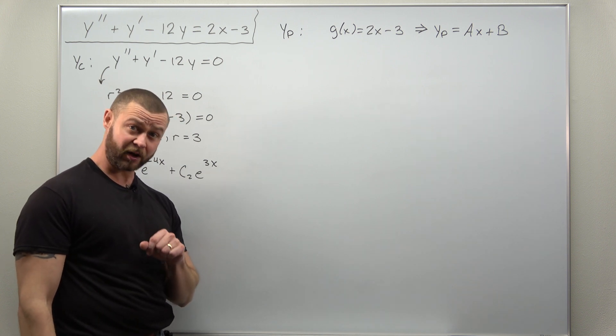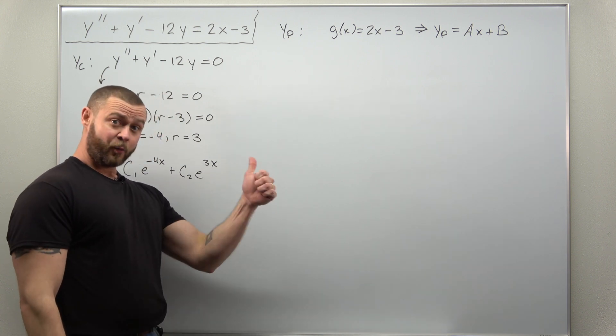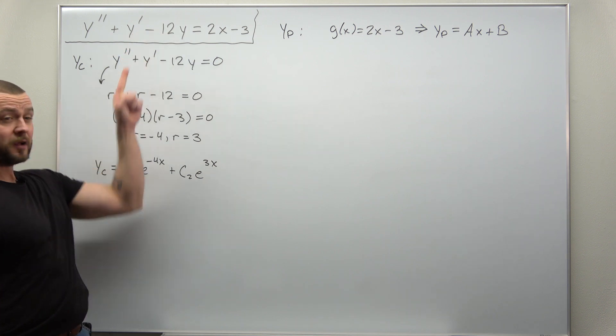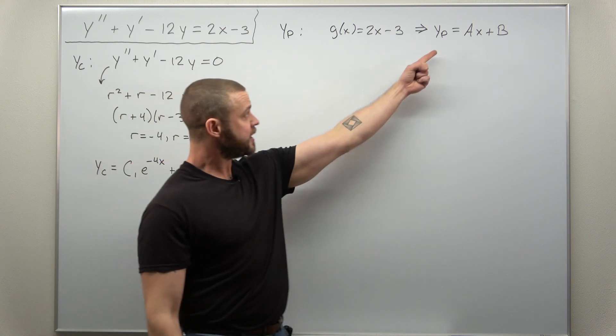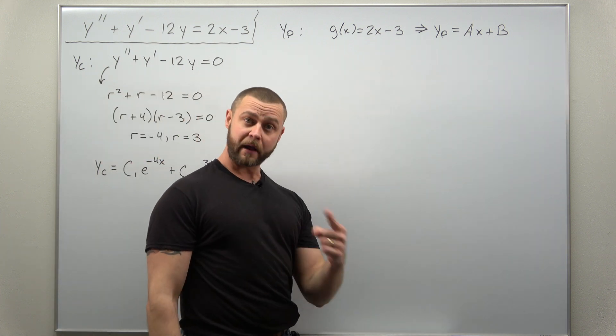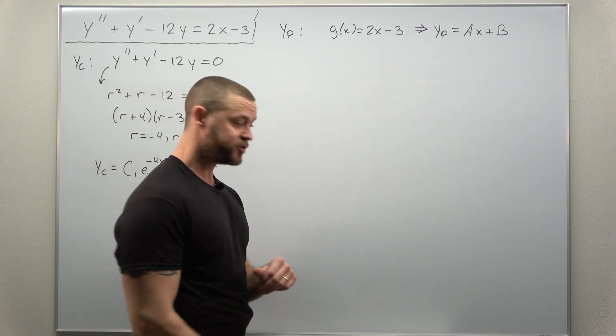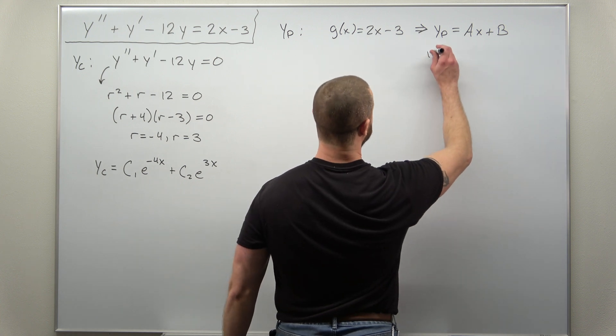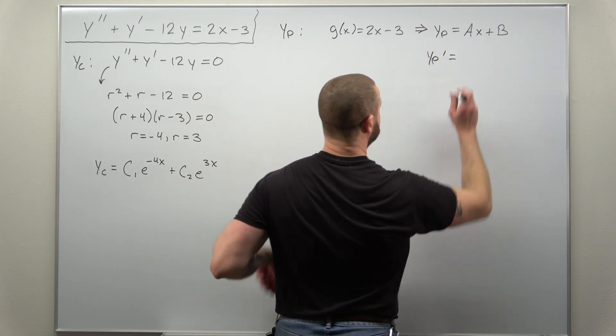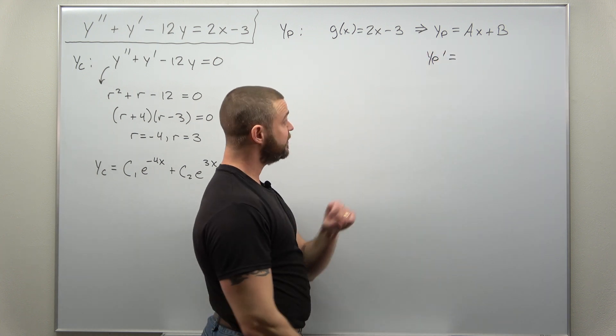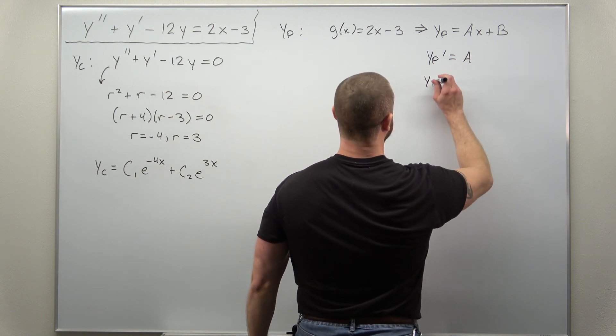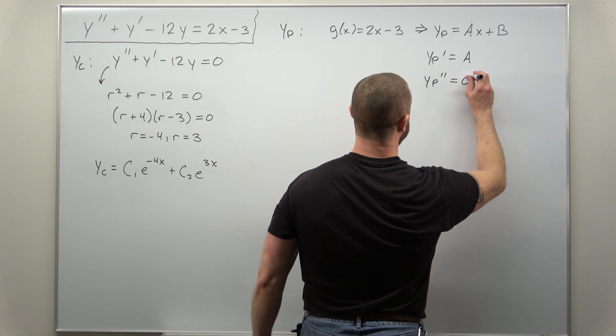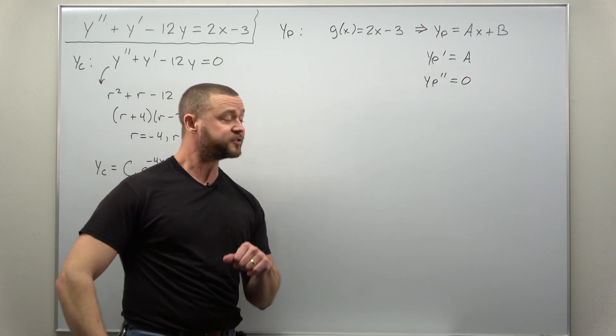In order to plug that in, we need the first derivative and the second derivative. Let's calculate yp prime and yp double prime. Looks like yp prime is just the constant a. And the second derivative is zero, which is really nice.